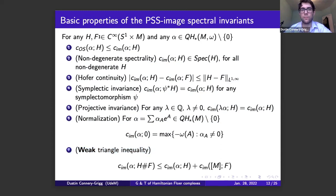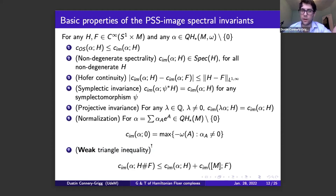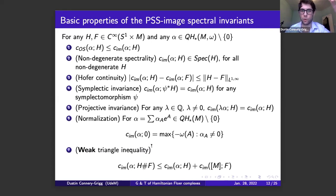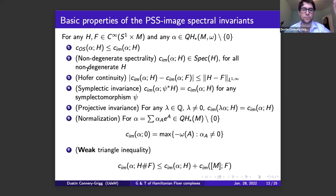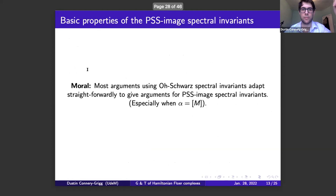The usual Oh-Schwarz spectral invariants satisfy a familiar list of properties, and these PSS-image spectral invariants satisfy almost all of the same list, except perhaps the triangle inequality. What I can show is a weak triangle inequality — really a triangle inequality for the fundamental class. On the sphere the full triangle inequality is true, which is interesting for people working with spectral invariants: there's a folkloric conjecture that satisfying this list of formal properties implies you are the Oh-Schwarz spectral invariants, so this gives a potential counterexample to that belief.